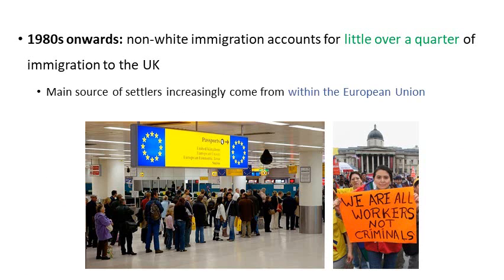From the 1980s onwards, we see another change. Non-white immigration accounts for little over a quarter of immigration to the UK today, because we start to see lots more Eastern Europeans and Europeans in general coming to the UK and settling. As the European Union has expanded, new countries brought new groups of people with the right, as EU citizens, to come and settle and work in the UK. What this means for the future following Brexit, we don't know — we may see a change to migration patterns once again.